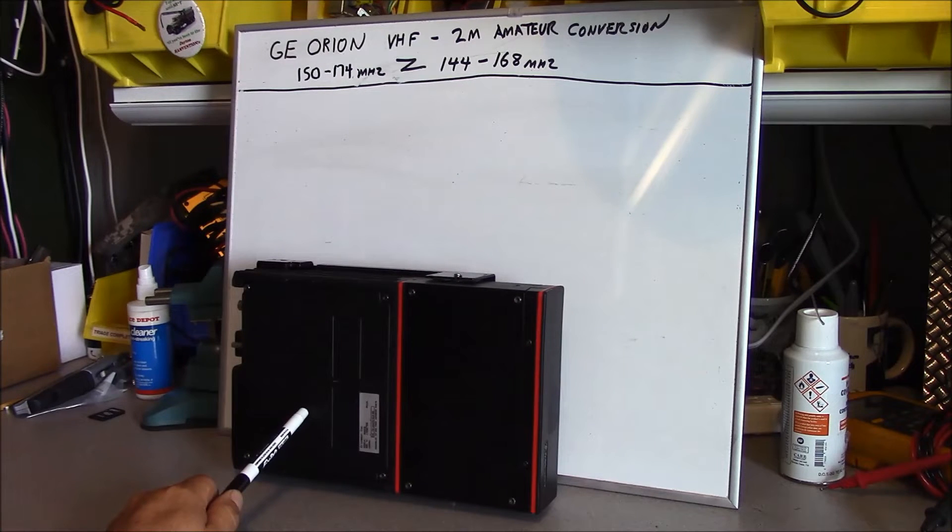If you saw my other videos on the GE Orion series, you would know that I have VHF and UHF versions of these radios. I paid $35 for both of them with accessories.